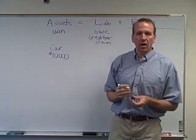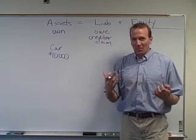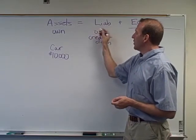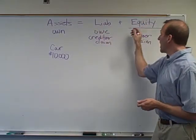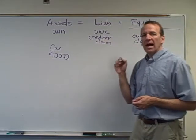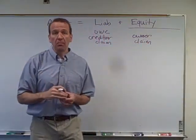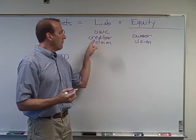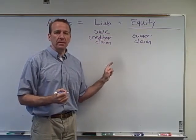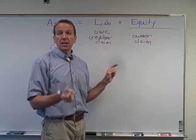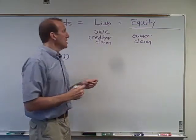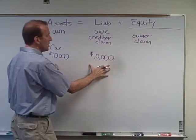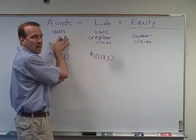That ten thousand dollar car is on the asset side - what the business owns. But how did the business get this car? We look at the other side of the equation: we either have a liability or equity. We could have gone to the bank and borrowed ten thousand dollars - that would be a liability, because the bank has a claim on that car. If we don't make payments, the bank will repossess it.